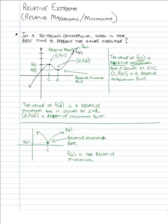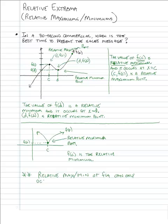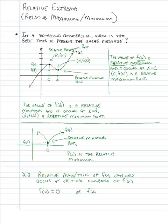Here's the key idea — building on what we did with increasing and decreasing functions. Relative maximums or minimums of a function f of x can only occur at critical numbers of f prime of x. Remember what critical numbers of f prime of x are: those are the values of x for which the derivative f prime of x is equal to zero, or the values of x for which the derivative is undefined.